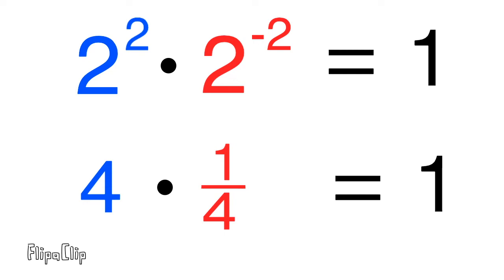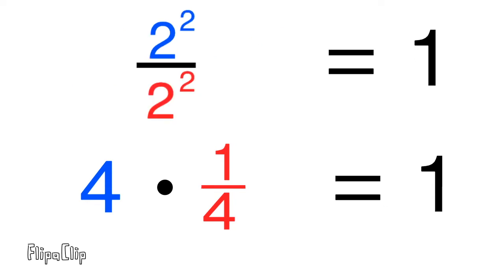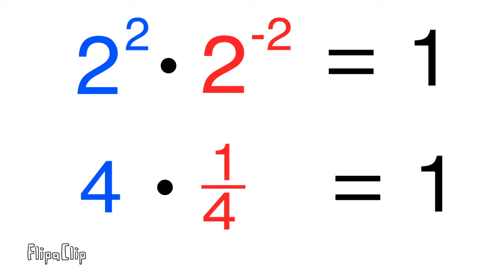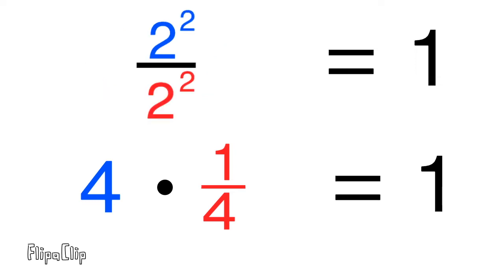Two to the power of two times two to the power of negative two can also be expressed as two to the power of two over two to the power of two, and any number divided by itself is always one. The important thing to remember is when you're moving the term that has the negative exponent to the bottom of the fraction, you're changing it from a negative exponent to a positive exponent.